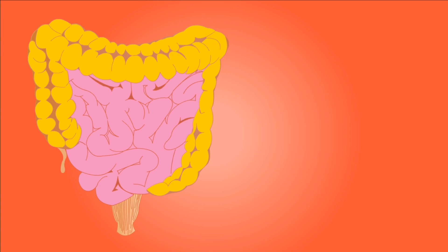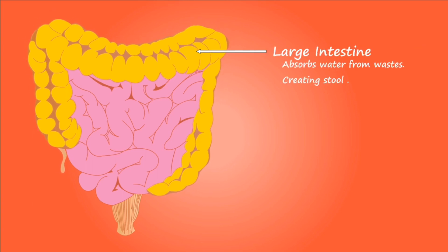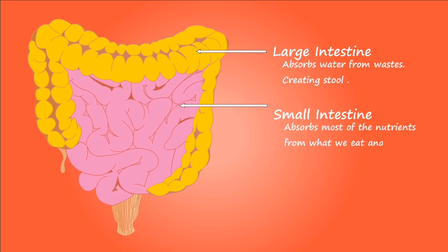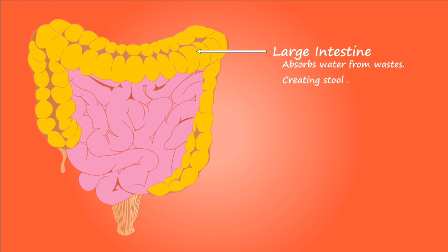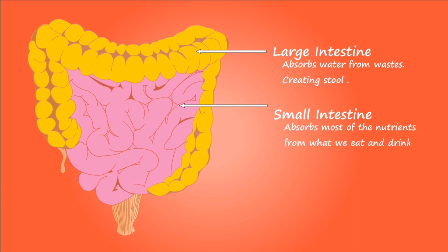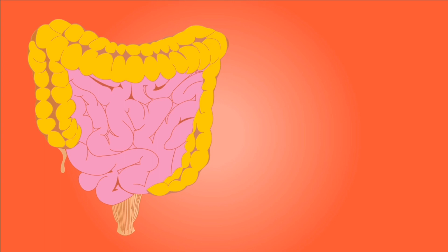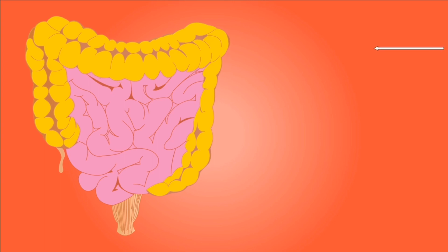The mucosa of the rectum is folded to form longitudinal anal columns. The smooth muscle layer is thick and forms the internal anal sphincter at the superior end of the anal canal. This sphincter is under involuntary control. There is an external anal sphincter at the inferior end of the anal canal, which is composed of skeletal muscle and is under voluntary control.